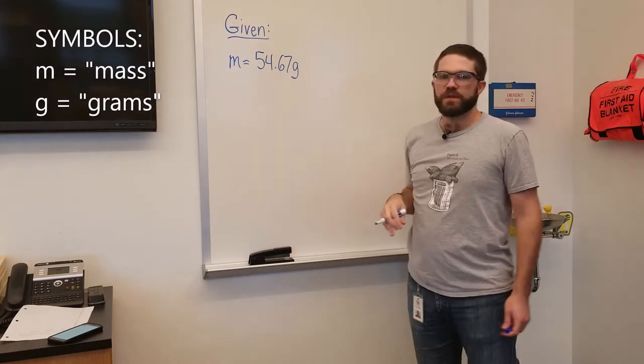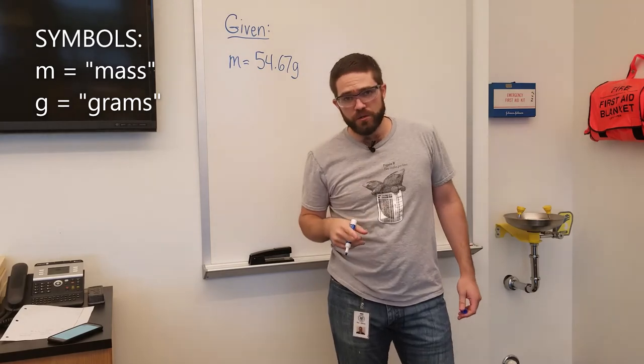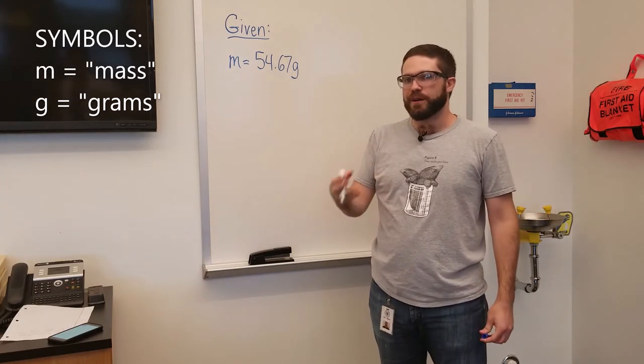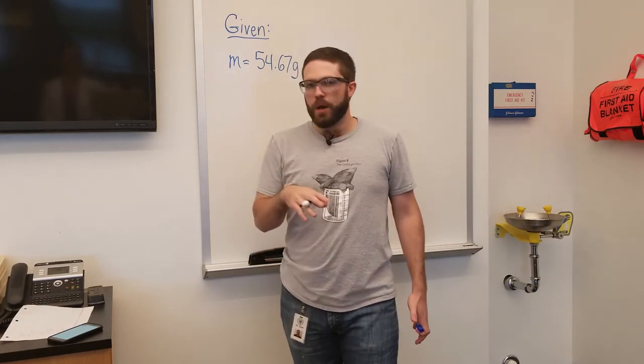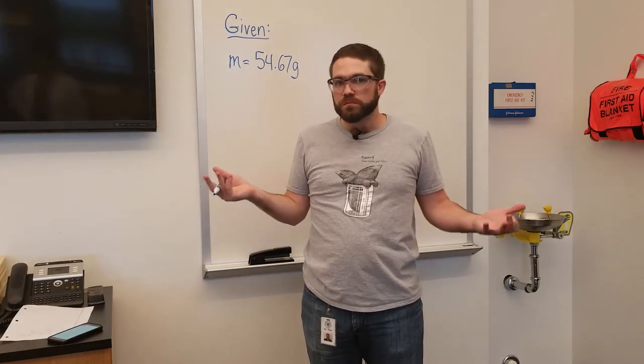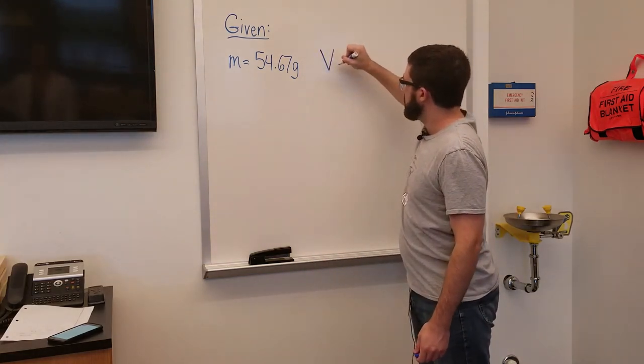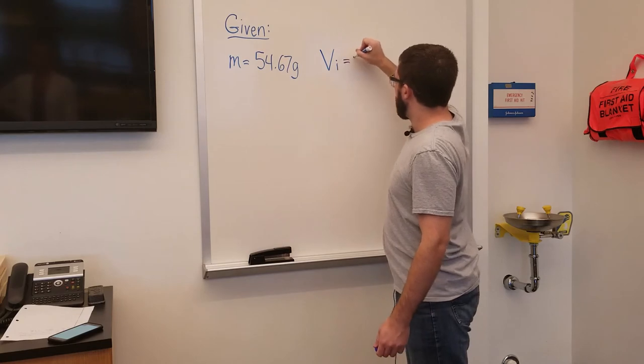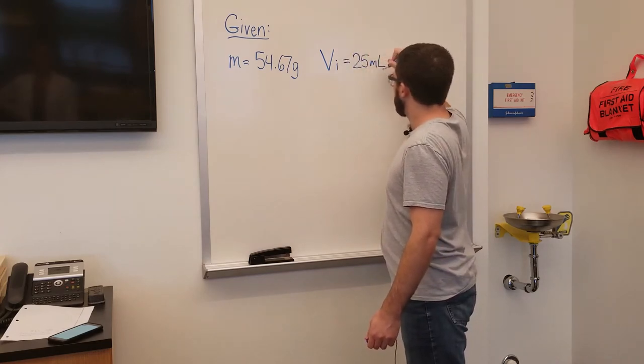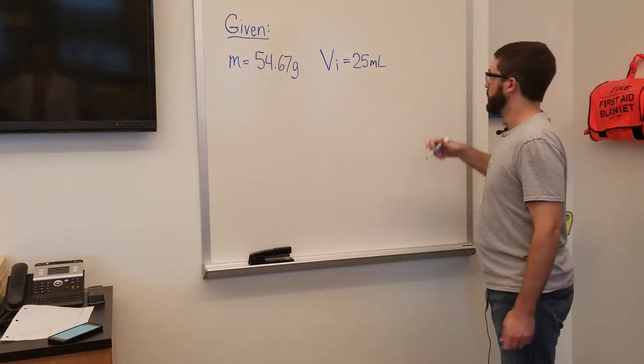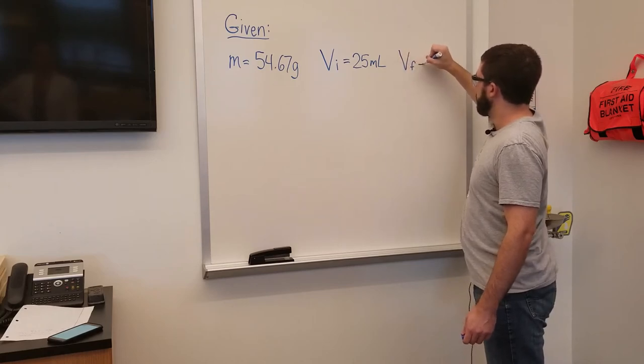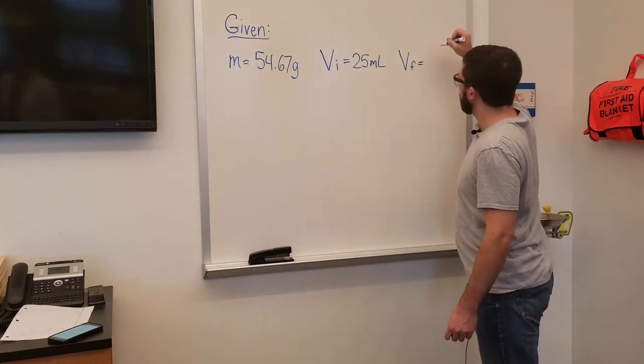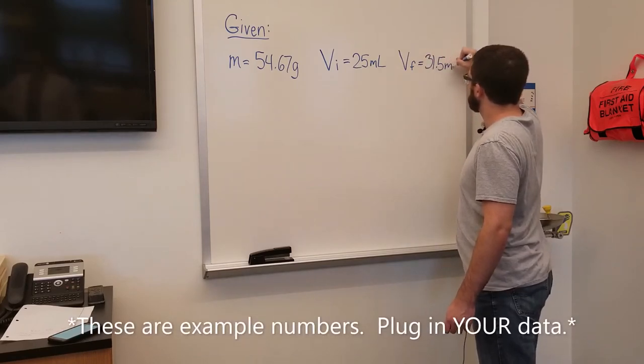Never forget your units whenever you're doing a calculation. You need units to make sure that your calculation is what you're looking for. Now we have two volume measurements. Which one are we going to use? Well, we want to use both. We have first the initial volume, V sub i, which means initial or the starting volume. And that initial volume was the water that we put into the graduated cylinder before we put the object in there, and that was twenty-five milliliters. We have our final volume, which we're going to call V sub f. And that's the volume that our water rose to after putting the object inside that water, and it rose to about 31.5 milliliters.